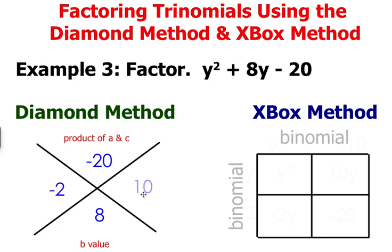The two correct factors are negative 2 and 10. Next over in the xbox method go ahead and set up your 2 by 2 box.